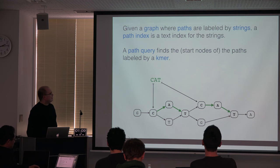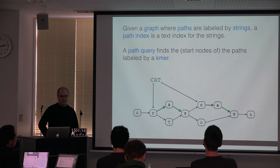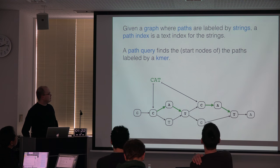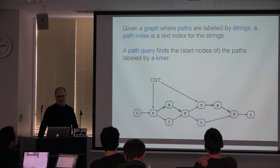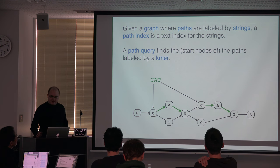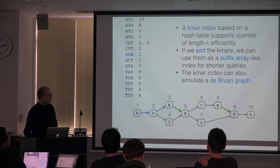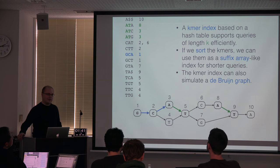The problem is basically: we have a graph — I don't really care what kind, as long as the paths in the graph are strings. For path queries given strings, given k-mers, we want to find the paths labeled by that string. The easiest, simplest way is to use a hash table: we select k, find all the k-mers in the graph, and represent them in a hash table.